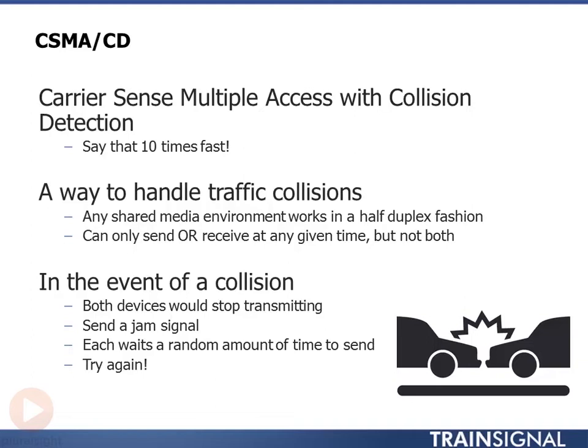What CSMA/CD does at the ground level is: if a collision is detected, both devices stop. They recognize the signal is going to be garbage — jumbled up and worthless — so there's no point trying to transmit. A jam signal is sent and everyone essentially stops talking. Then each device rolls the dice and waits a random number of milliseconds or microseconds before trying to transmit again. This way, if everyone comes up with a different number, ultimately someone is first to transmit and the others continue to wait.